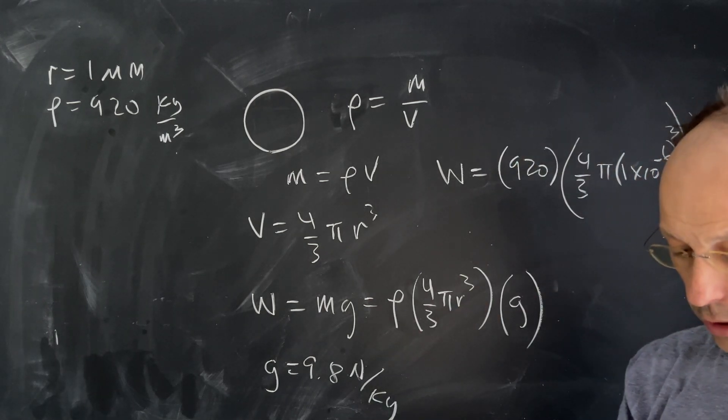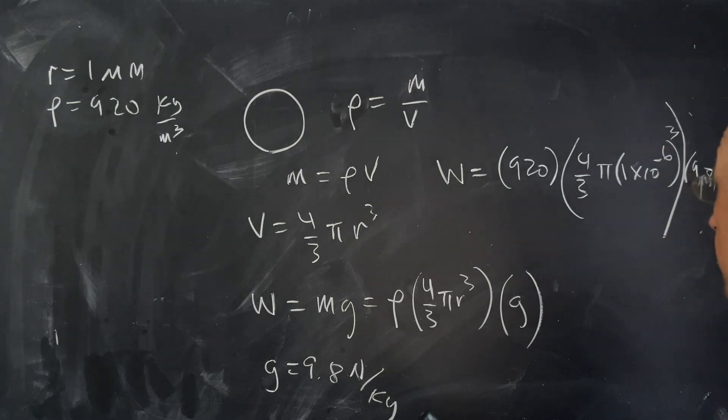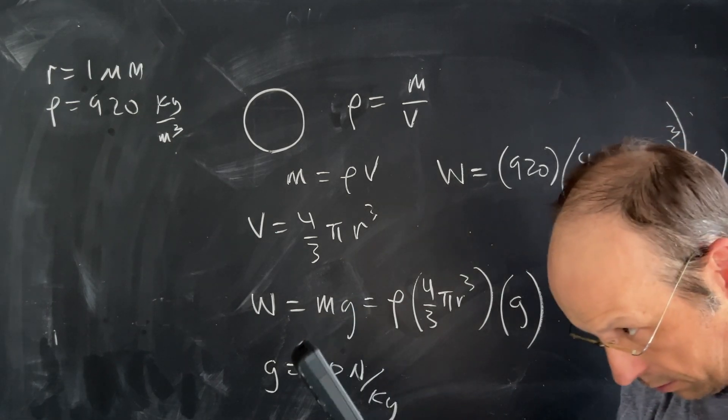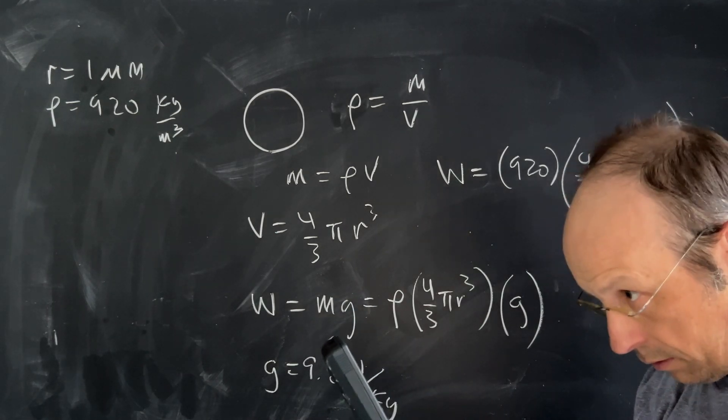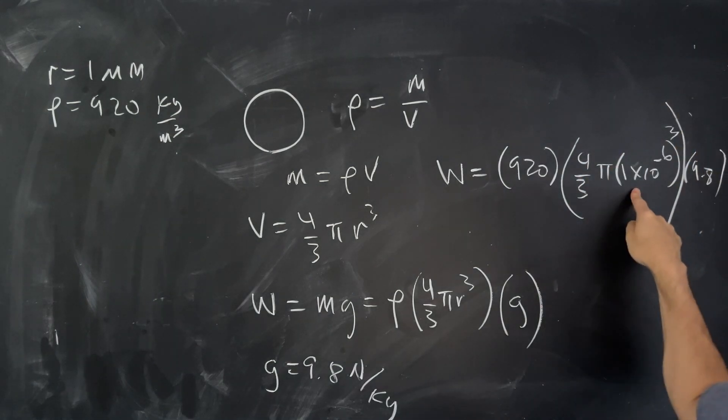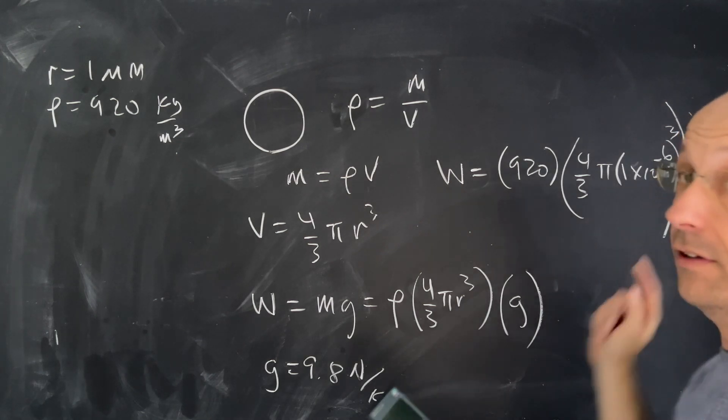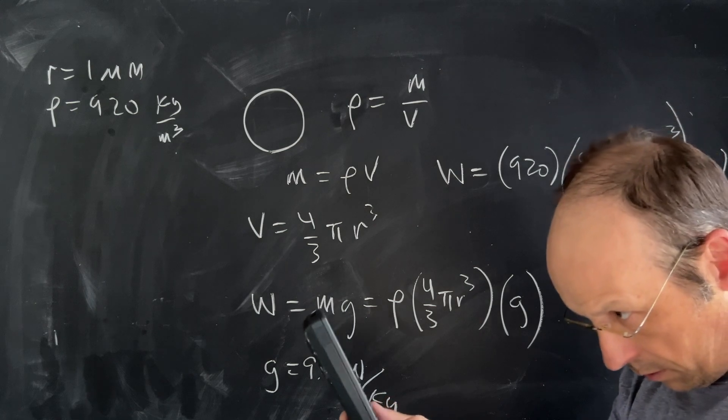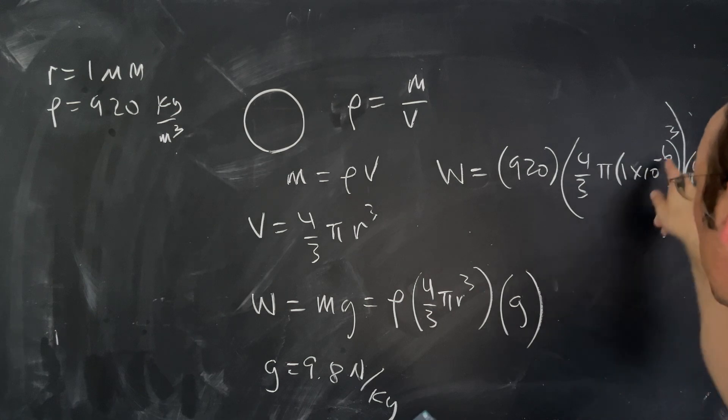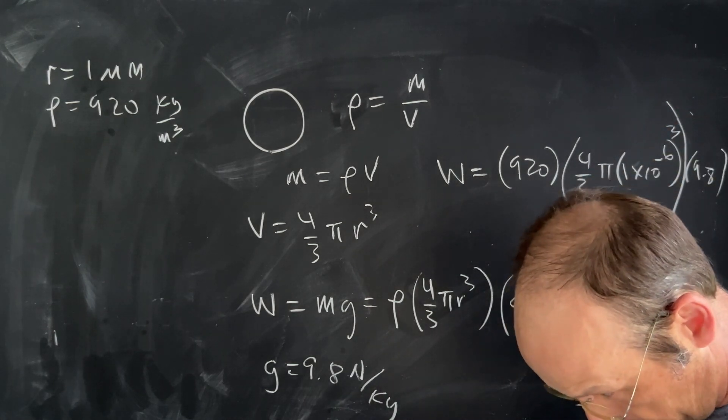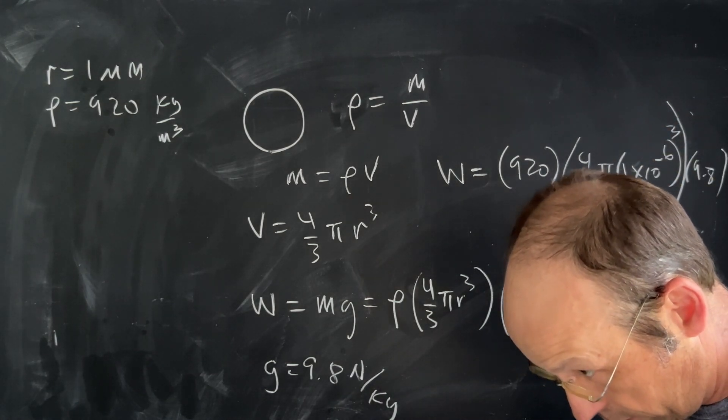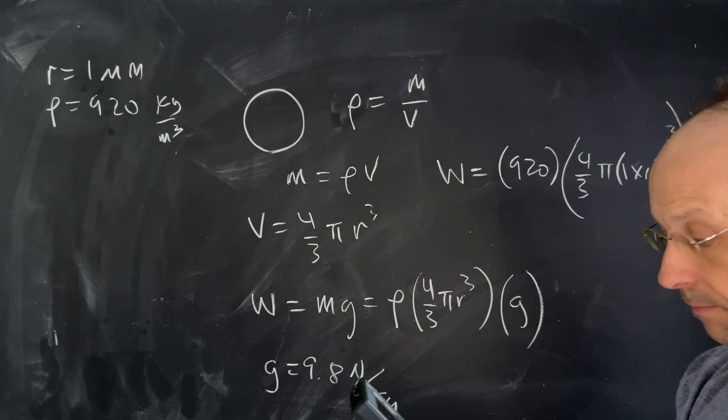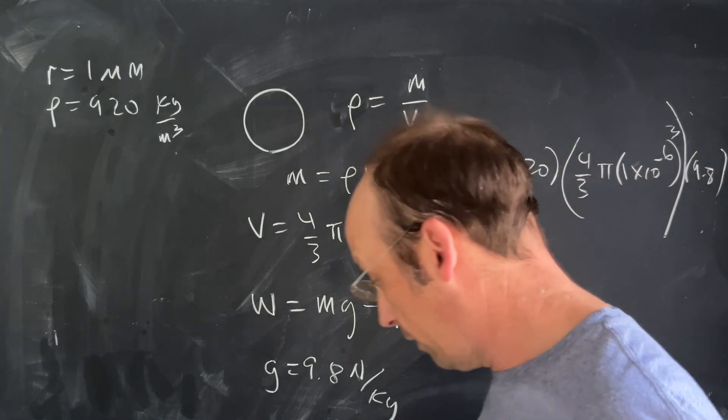Let's go 920 and then I need to multiply by 4, divide by 3, multiply by π, and then I need to do this part. So I'm going to do 1 times 10 to the negative 6. I'm 1 negative 6 and now I'm going to cube it. That's enter 3 cubed. Now I'm going to multiply by the rest of the stuff and multiply by 9.8 and I get the weight of...